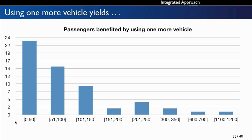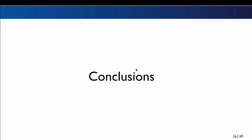Another interesting result is the number of passengers benefiting from using one more vehicle. The first column in this histogram shows that in 23 cases where we allowed one more vehicle during the epsilon-constraint iterations, the number of passengers benefiting from well-timed transfers increased between 0 and 50. There is also one case where allowing one more vehicle increased passenger transfers between 1,000 and 1,200 — and we are able to identify these cases by implementing our solution approach.